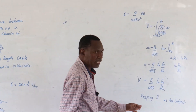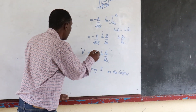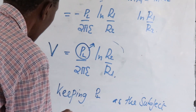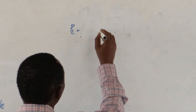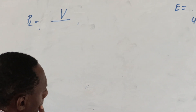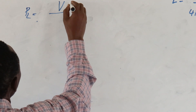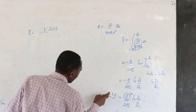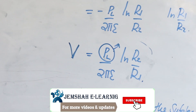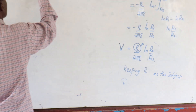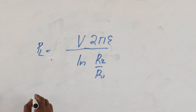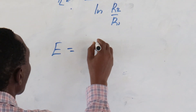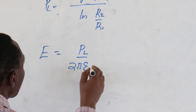We can say, keeping PL as the subject. I want PL as the subject of the formula. PL will be equal to V times 2πε over ln(R2/R1). This is the formula for PL. Are we together? And originally, E is equal to PL over 2πε R.